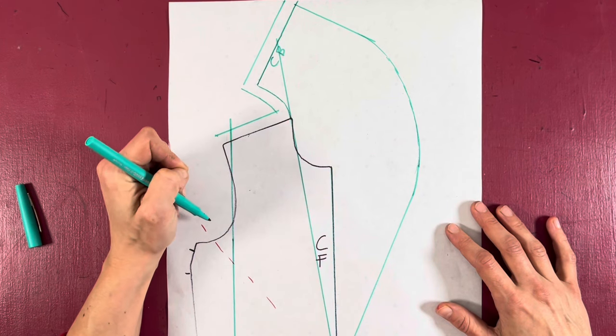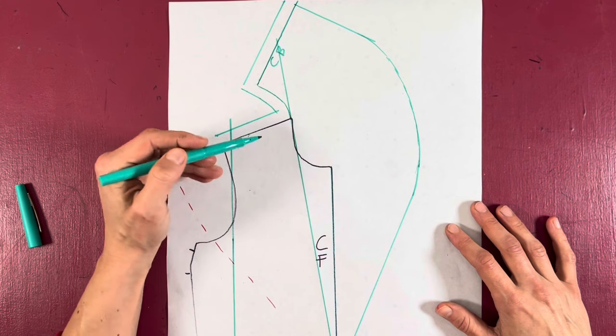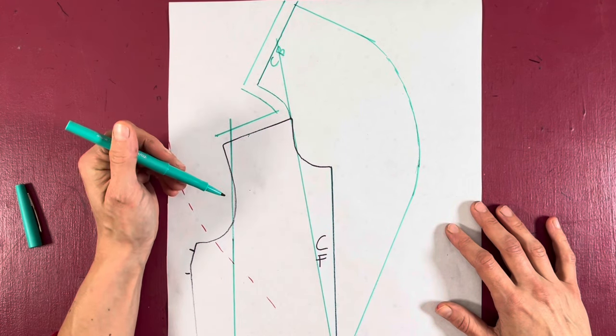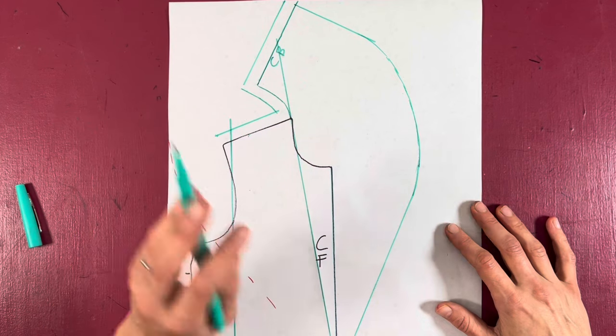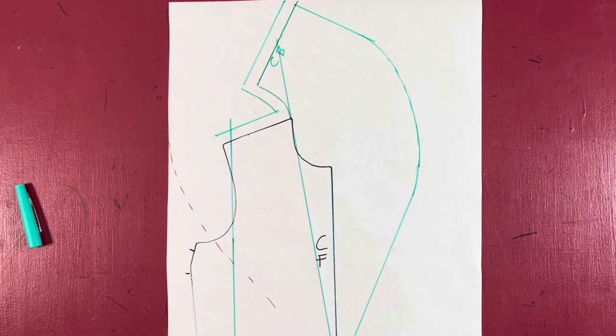into the shoulders of your top, and then of course your back neck gets sandwiched into the neckline on your top. If you want to turn this into a separate stole, here's what you need to do.